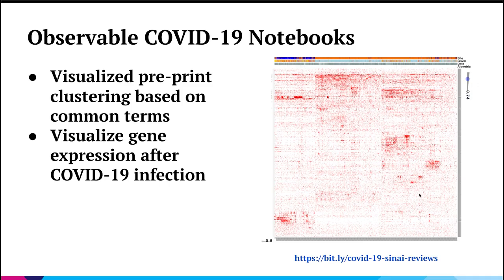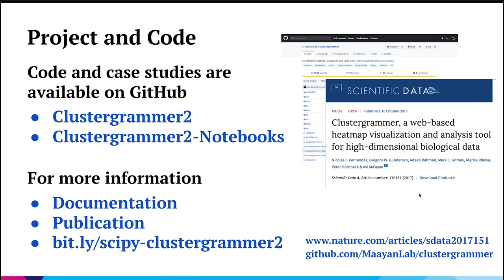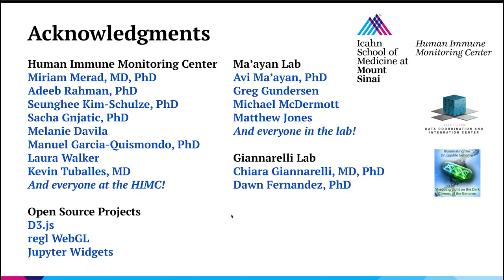The original ClusterGrammar was previously published in Nature Scientific Data. We're working on a manuscript for ClusterGrammar 2. All of our code and examples are available on GitHub, and we have a documentation page. We'd like to acknowledge everyone at the Human Immune Monitoring Center that's helped out, everyone in my previous lab where I did a postdoc and developed the original ClusterGrammar, and our collaborators. Finally, all the open-source developers working on these amazing open-source projects — without which none of this would be possible. Thank you for your time.